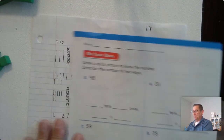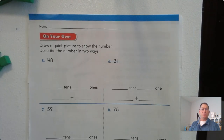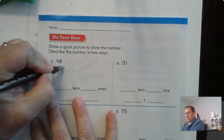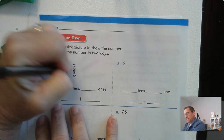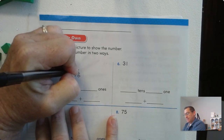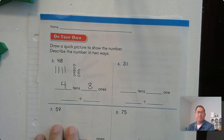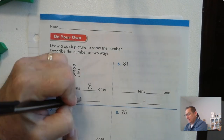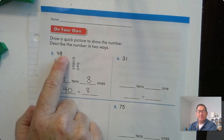Let's look at page 27. Draw a quick picture to show the number and describe the number in two ways. 48: the four means four tens and the eight means eight ones. So four tens and eight ones — four tens is 40, and eight ones is eight. So 48 can be broken up into 40 plus eight.